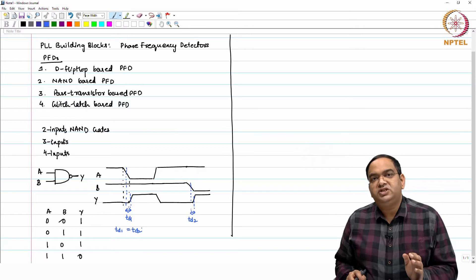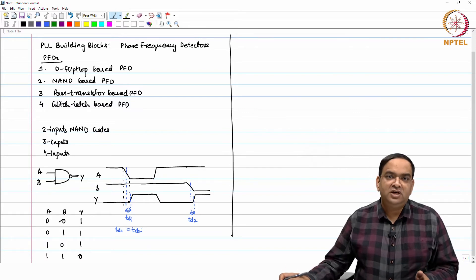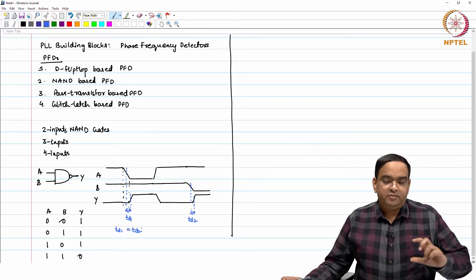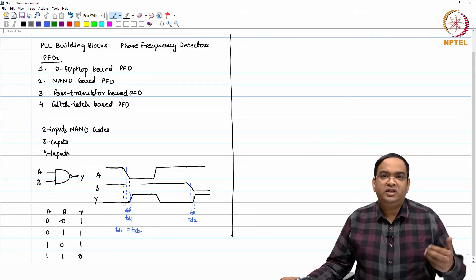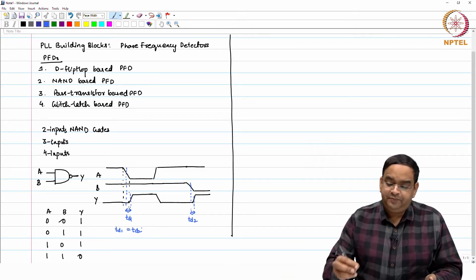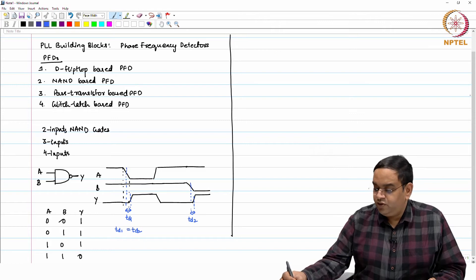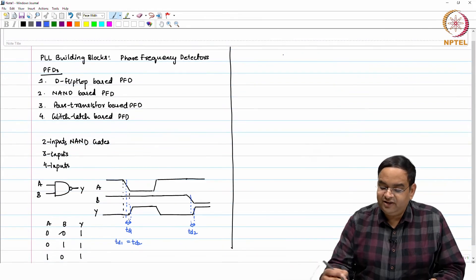If you have a phase error, the output of the PFD should change with respect to the sign of the phase error. It should change by the same amount whether it is positive or negative. But what happens when you implement this NAND gate using transistors?